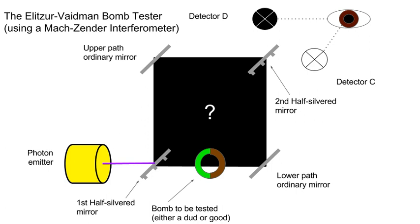But, like the radioactive material in the box with Schrödinger's famous cat, upon its encounter with the half-silvered mirror at the beginning of the experiment, the photon paradoxically does and does not interact with the bomb. According to the authors, the bomb both explodes and doesn't explode — but this is only in the case of a live bomb. In any event, once observed by the detectors, it will have only traveled one of the paths.